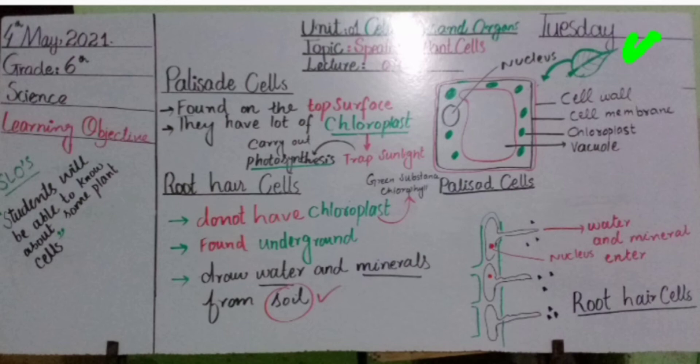Chloroplasts contain a substance called chlorophyll. Chlorophyll traps sunlight during photosynthesis. Chloroplasts contain a green colored pigment called chlorophyll, and this is present in palisade cells. You can see here the diagram of the palisade cells.